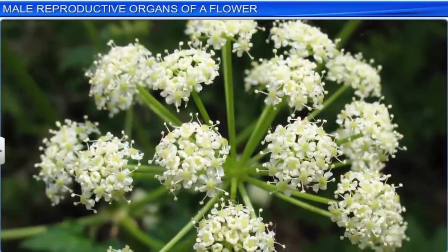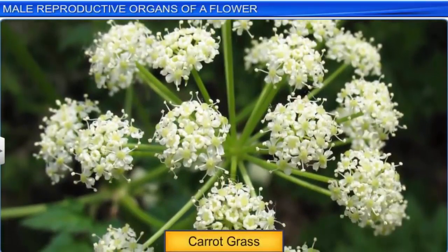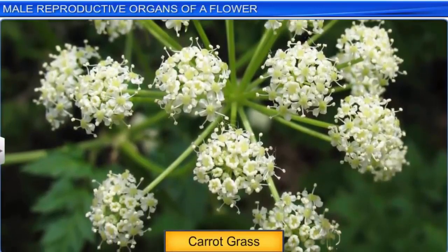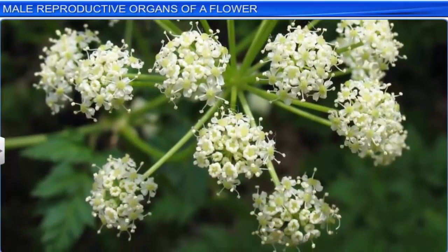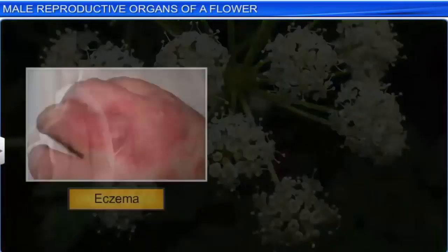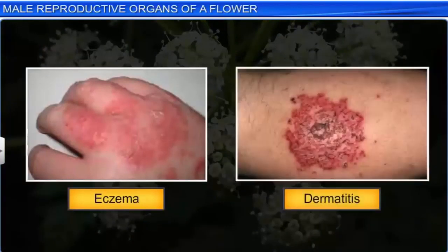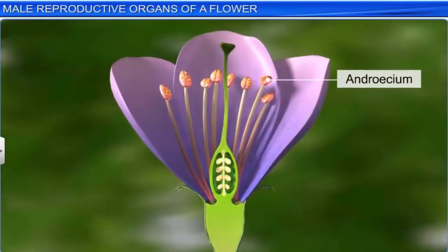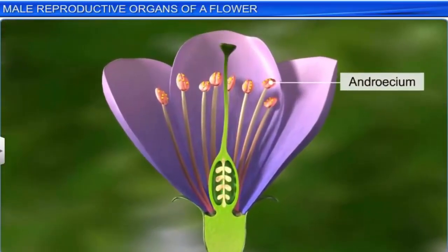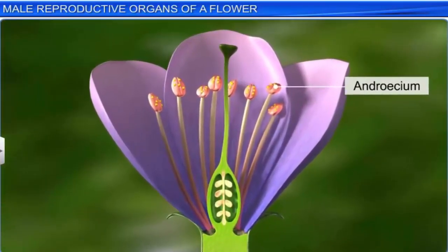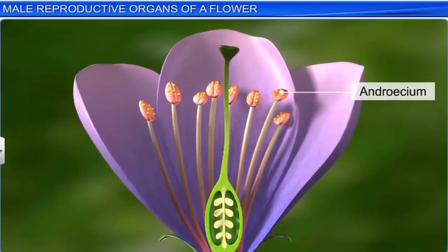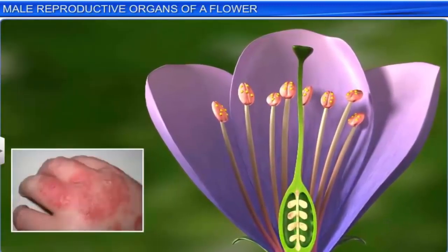Pollen grains, however, can trigger allergies in some people and can cause asthma and bronchitis. In fact, the weed carrot grass or Parthenium hysterophorus and its pollen, found in non-cultivated lands in Punjab, causes allergies such as eczema, dermatitis, and other skin diseases. Pollen, formed inside the stamen, plays an important role in plant propagation and also serves as a source of nutrition, although in some cases it may trigger allergies.